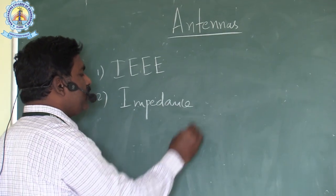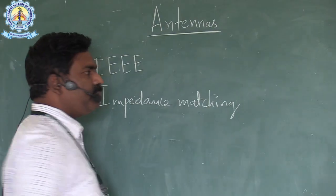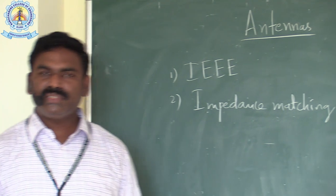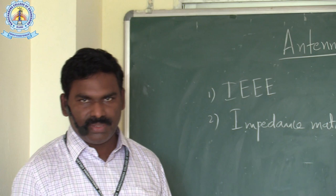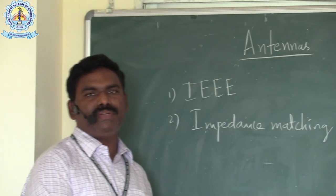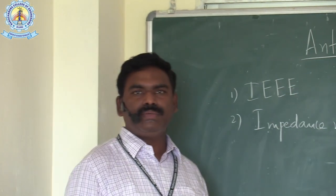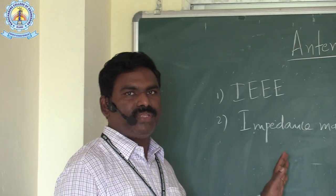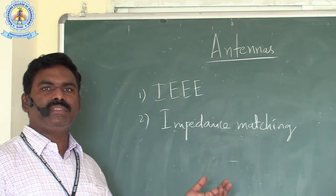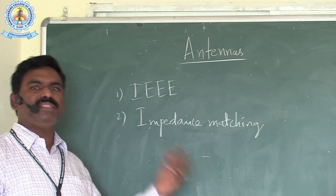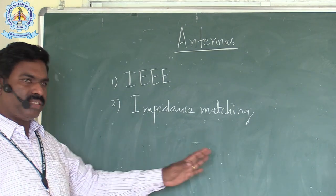When we say impedance matching, we can remember the maximum power transfer theorem. What is the maximum power transfer theorem? If the source impedance matches with the load impedance, then maximum power is transferred from source to load. So what does the antenna do? It matches the impedance of the load with the source. The same thing happens whether it is acting as a transmitting antenna or a receiving antenna — the impedance matching is done.